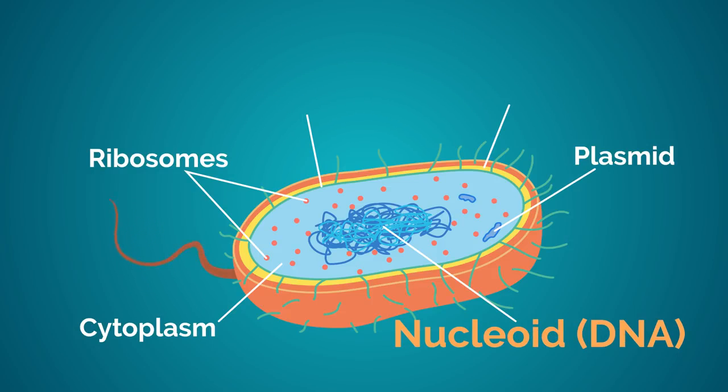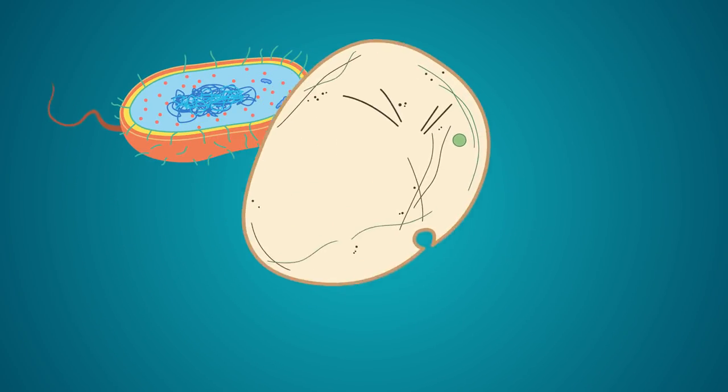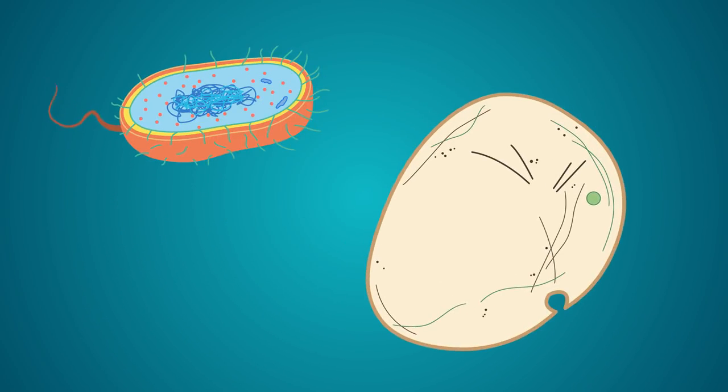Prokaryotes were the first type of organisms to evolve and are still the most common organisms today. It is believed that eukaryotes evolved from prokaryotes.